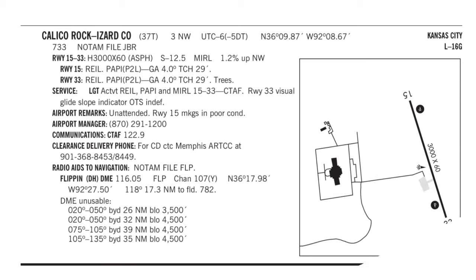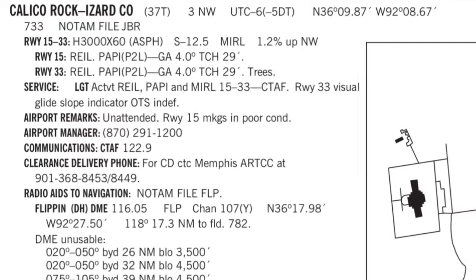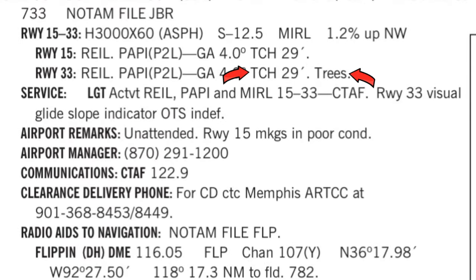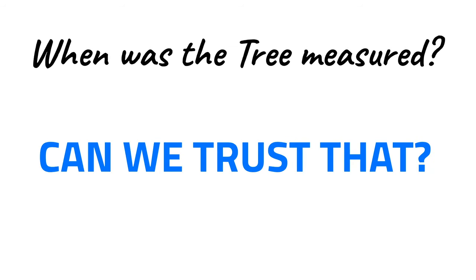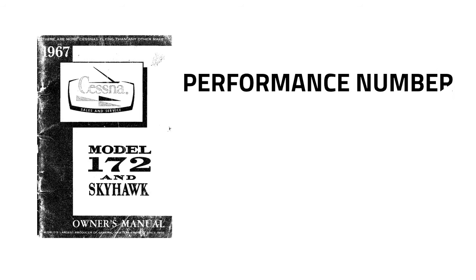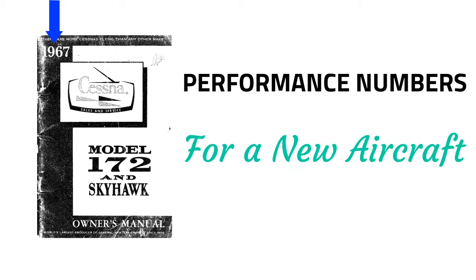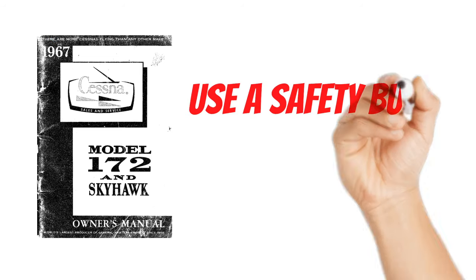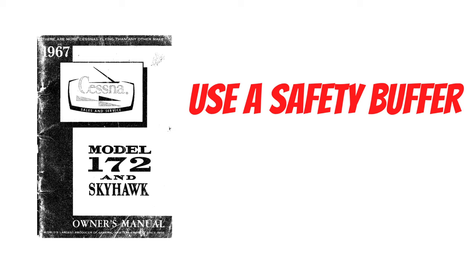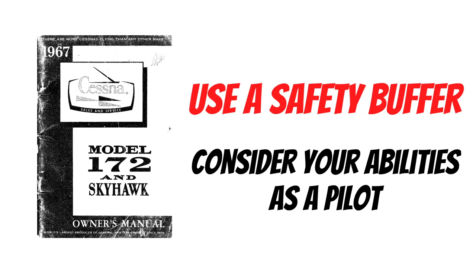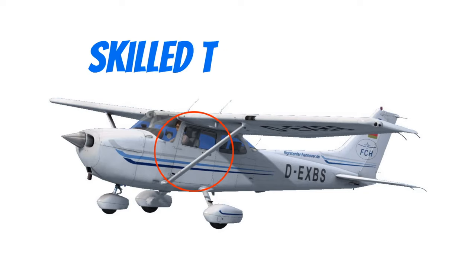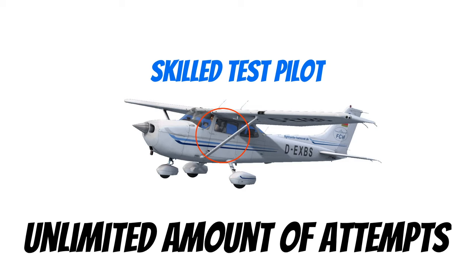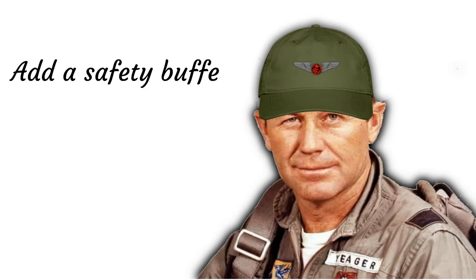The book answer you calculate on the written exam is not always the best answer when making real flight calculations. Take a look at this note in the chart supplement for Calico Rock — they tell us that the threshold crossing height or TCH is 29 feet for some trees at the end of the runway. When was that tree measured? The distance calculations in the POH were numbers the manufacturer came up with when the aircraft was brand new. If you're flying a 50-year-old airplane, give yourself a safety buffer because the old girl probably doesn't fly quite like she used to. Also consider your abilities as a pilot — when the manufacturer came up with these numbers, they used a test pilot who probably had thousands of hours and unlimited attempts to get the best possible performance.